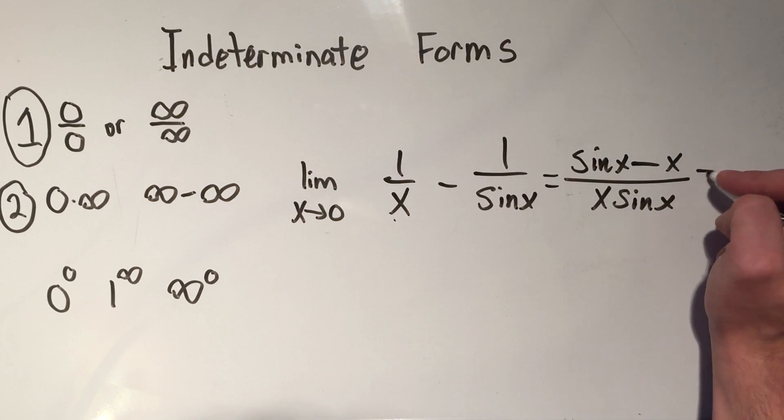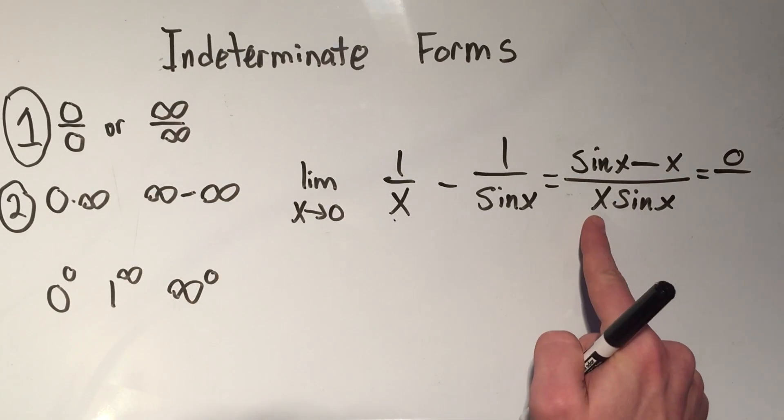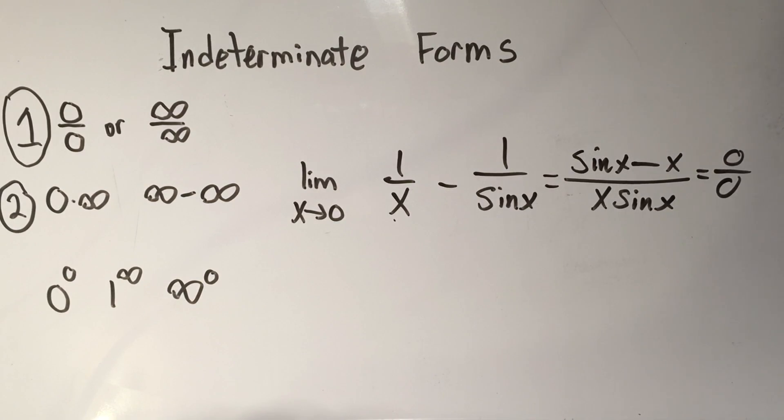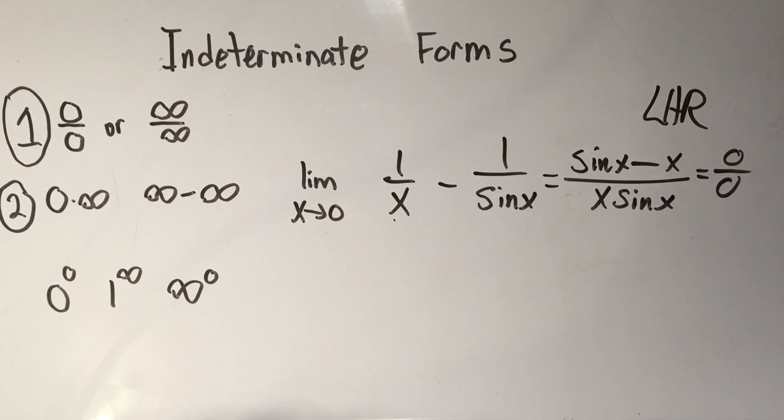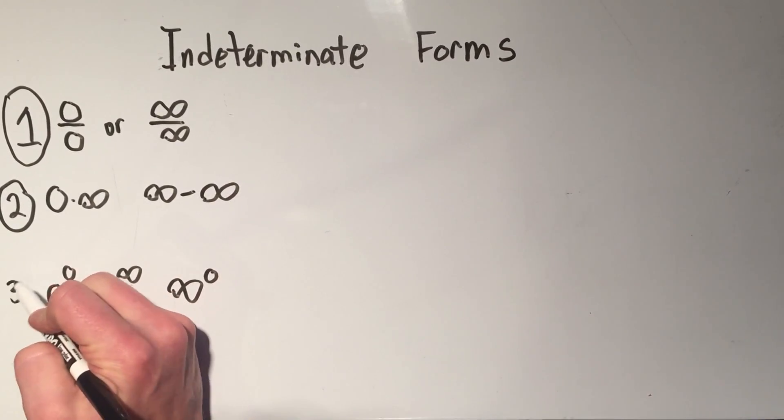Voila, you've combined those two fractions, and now if I plug in zero, sine of zero is zero, minus zero is zero, and I'll get a zero on the bottom. Hey, look at that, I'm in stage one again, and then I can immediately jump to L'Hôpital's rule. Okay, all of these are just transforming back to step one.